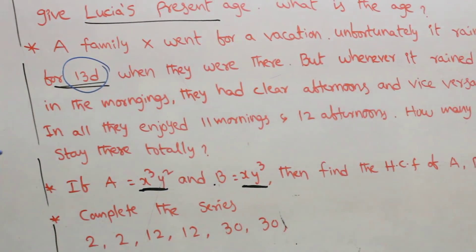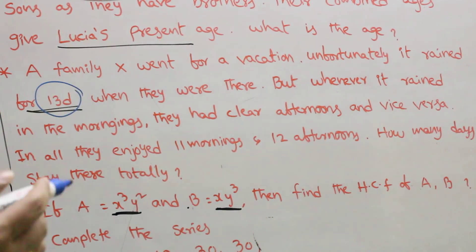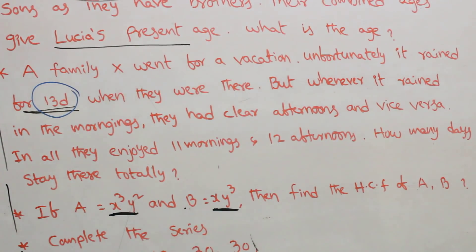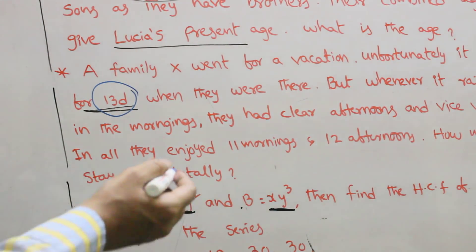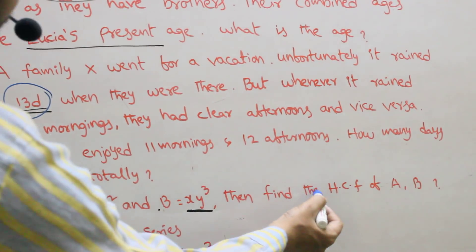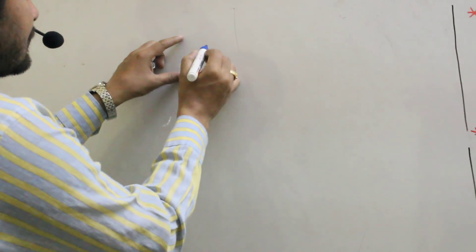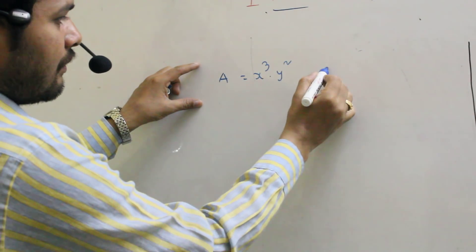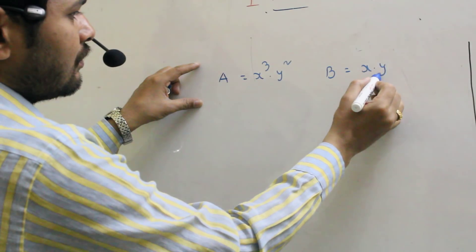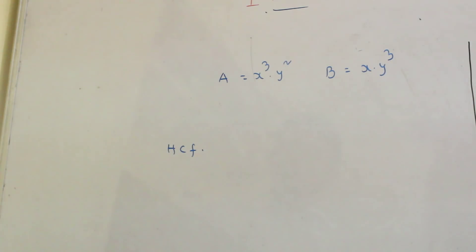If A equals X cubed times Y squared and B equals X times Y cubed, then find the LCM of A and B. Also find the HCF of A and B. HCF means highest common factor. A equals X³Y² and B equals XY³.